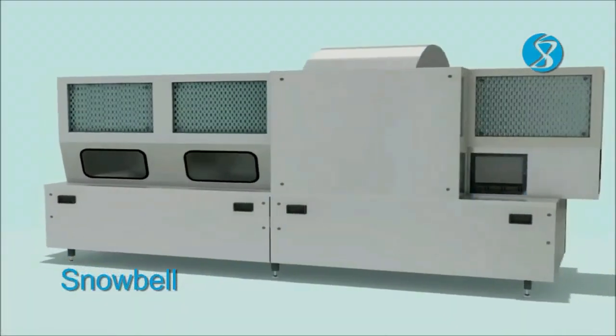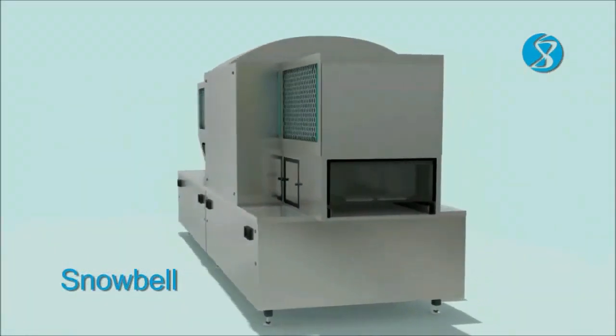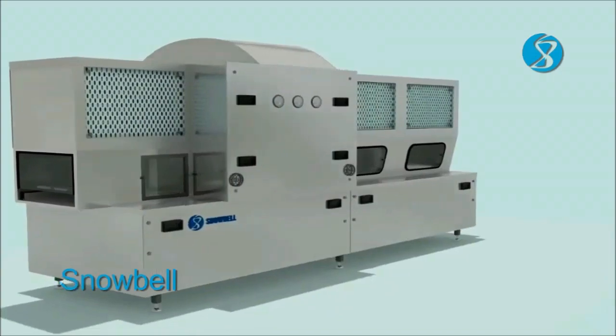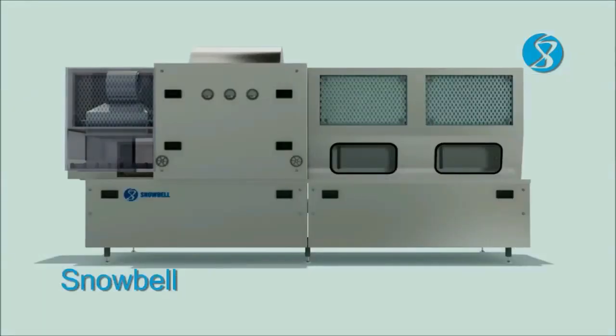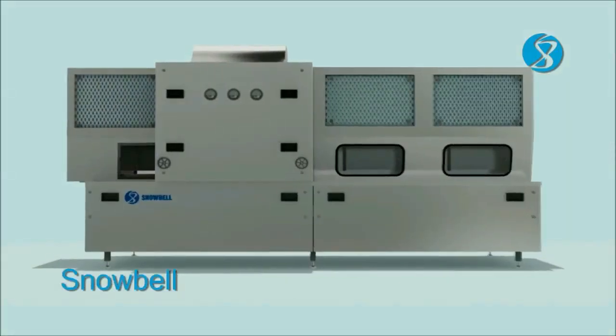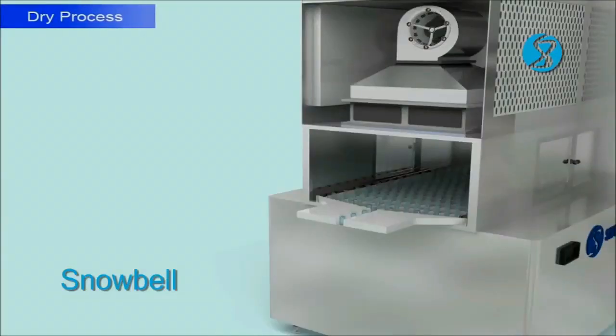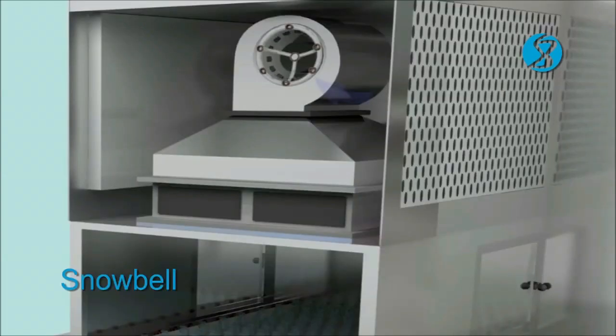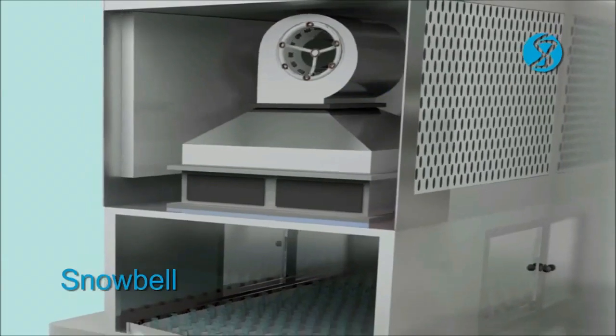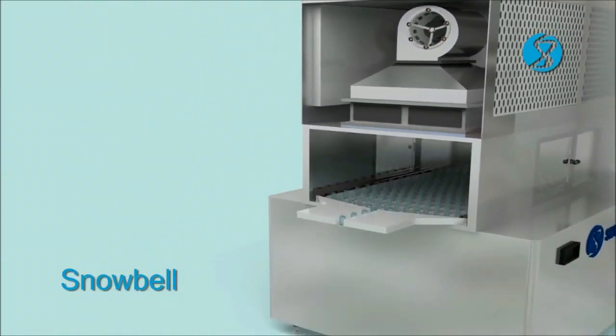Vials exiting the washing machine are further processed by sterilizing and depyrogenating tunnel. The vials are carried by a conveyor into the first chamber called drying zone. Room air is pulled in through a 5-micron filter by a blower and is forced down through a sub-micron filter at a controlled velocity onto the batch of the vials moving in the tunnel.